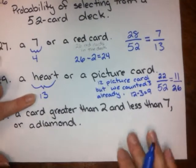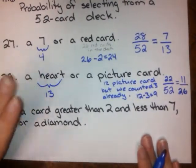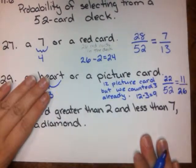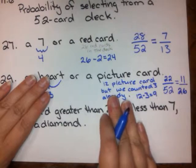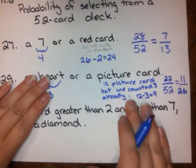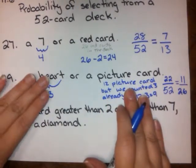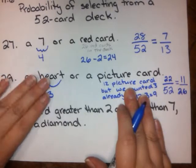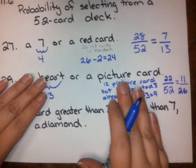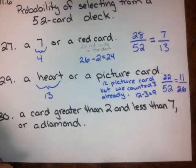So we had to be careful here. There are 13 hearts in the deck and 12 picture cards, but 3 of those picture cards were already counted. You have to be careful not to double count those when figuring out the probability.